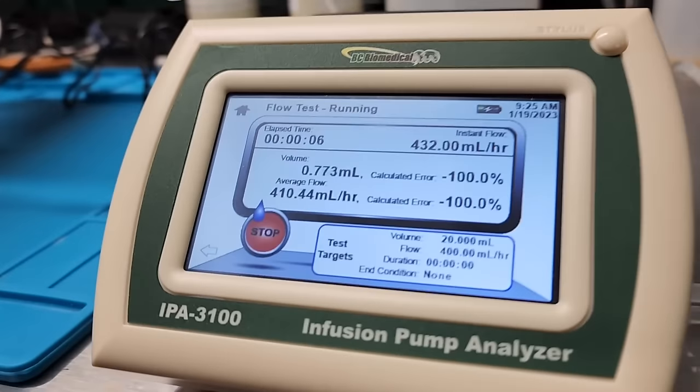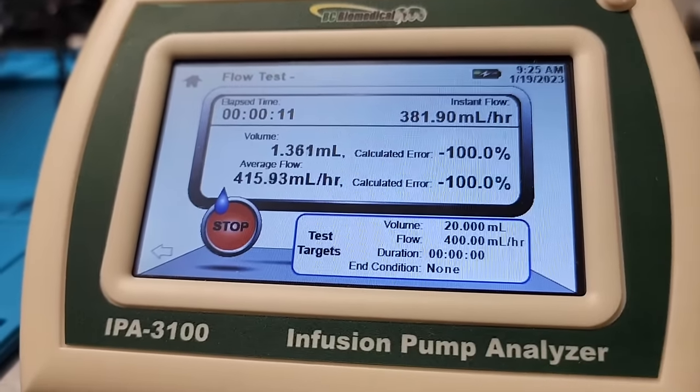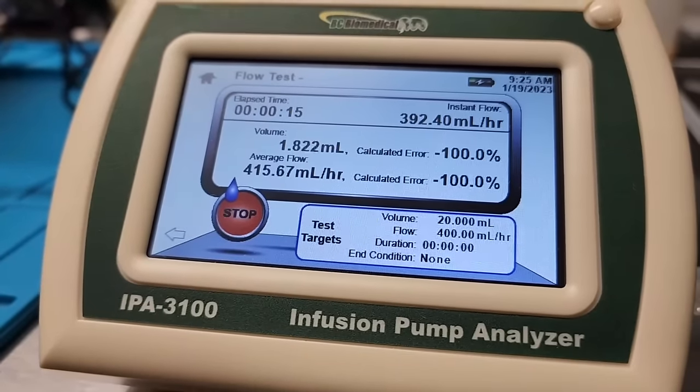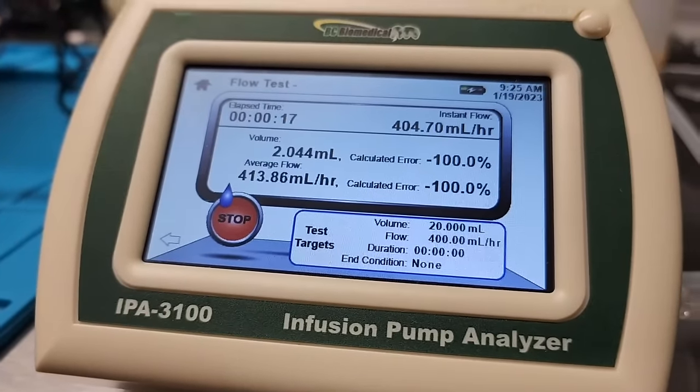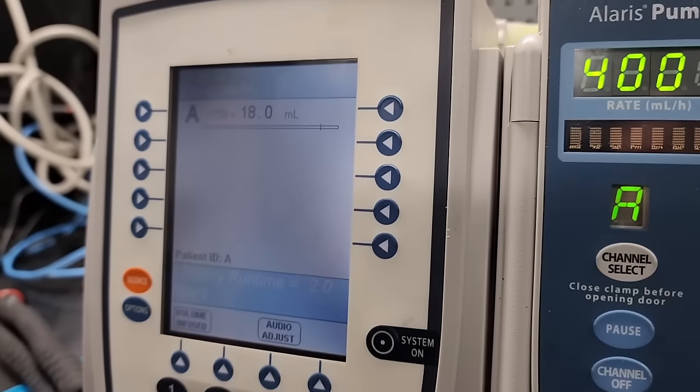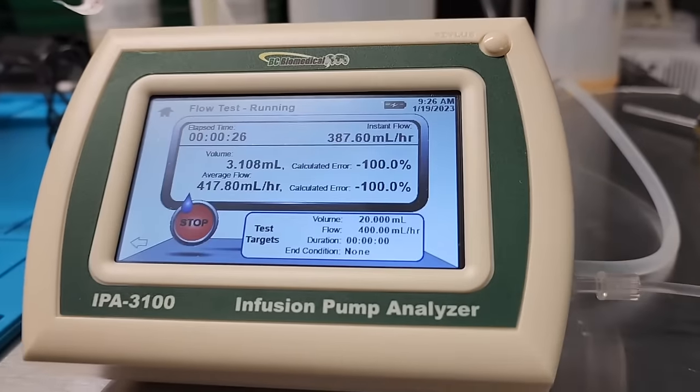So you can see the flow, I've set it at 400 milliliters per hour. Mind you, this pump is not calibrated. So there you go, it's keeping up at 400 milliliters per hour. We've got 2 milliliters already. Yep, 2 milliliters are already infused. It's keeping up quite well.